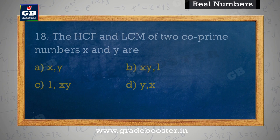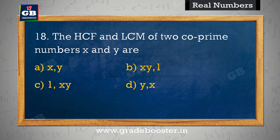The HCF and LCM of 2 co-prime numbers x and y are. 2 co-prime numbers x aur y ki HCF aur LCM hai. A. x, y  B. xy, 1  C. 1, xy  D. y, x.